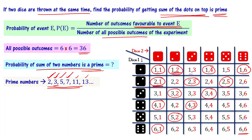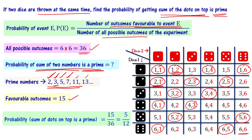For sum = 11 (prime): (5,6) and (6,5) — 2 outcomes. The total number of favorable outcomes is 1 + 2 + 4 + 6 + 2 = 15. So the probability of getting the sum of the dots on top as a prime number is 15/36.